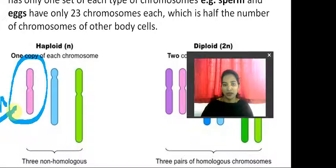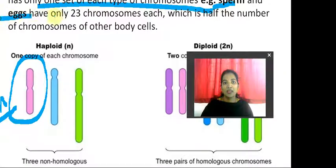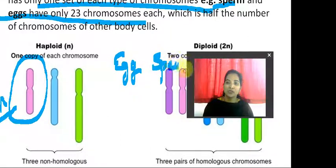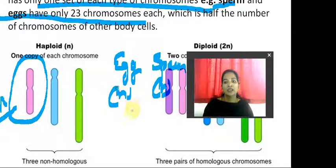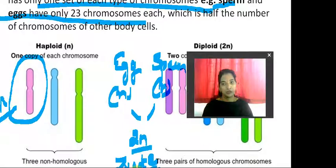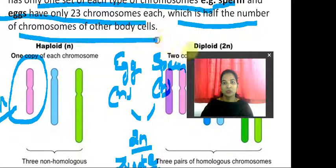A haploid cell has only one set of each type of chromosome. For example, sperm and eggs have only 23 chromosomes each. The egg has the haploid number and the sperm also has the haploid number of chromosomes. When they combine together, it becomes diploid — that situation we call a zygote. Zygote becomes an embryo, embryo becomes a fetus, fetus becomes a baby.